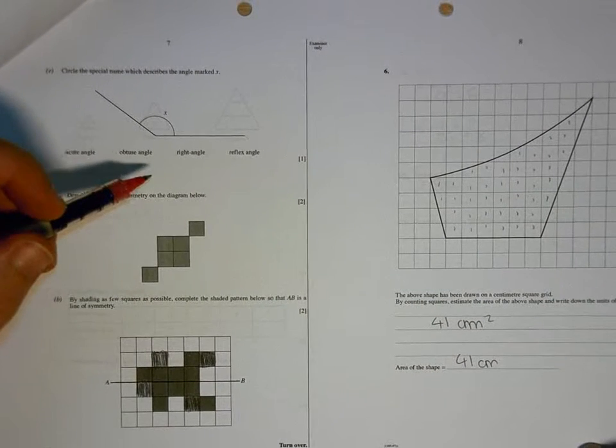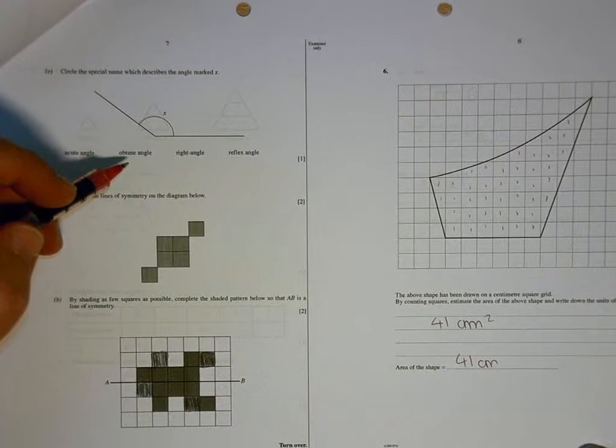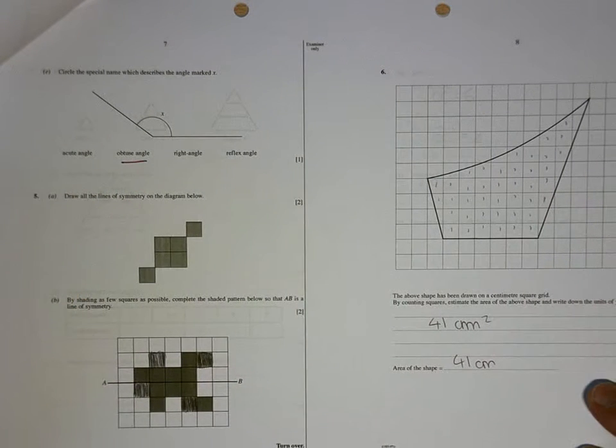This again is something that you've just got to know. That's an angle that's bigger than 90 degrees, which means it's an obtuse angle. They're facts that you've got to learn.